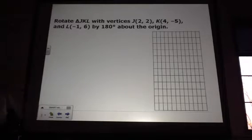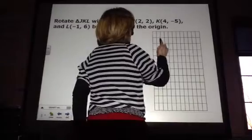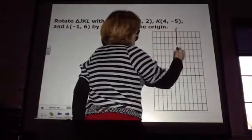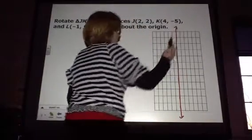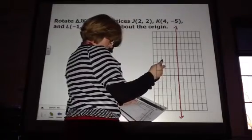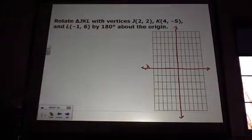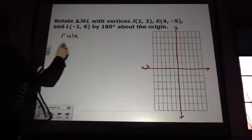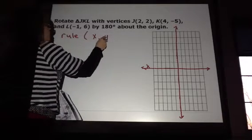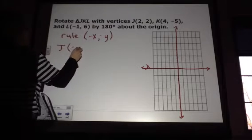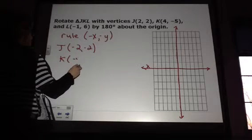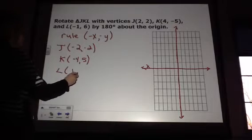Alright, so let's apply this. So let's go ahead and make your coordinates here. We've got a triangle JKL and we are going to rotate it 180 degrees around the origin. Okay, so let's start with the rule. When it's 180 degrees, you keep your coordinates but change them to their opposite. So J prime is now going to be negative 2, negative 2. K prime is now going to be negative 4, 5. And L is now going to be 1, negative 6.